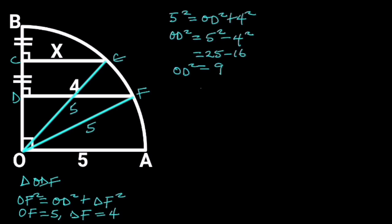So OD squared is equal to 9. Taking the square root of both sides will give us OD is equal to 3.